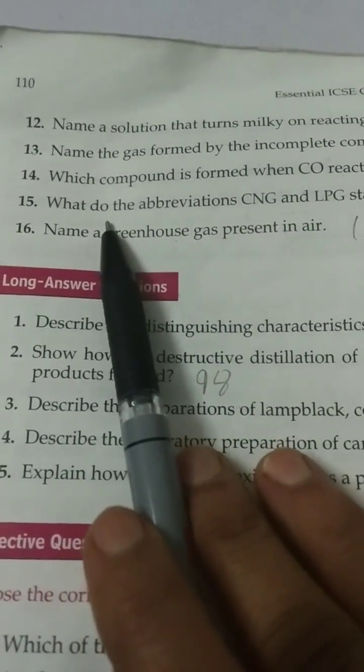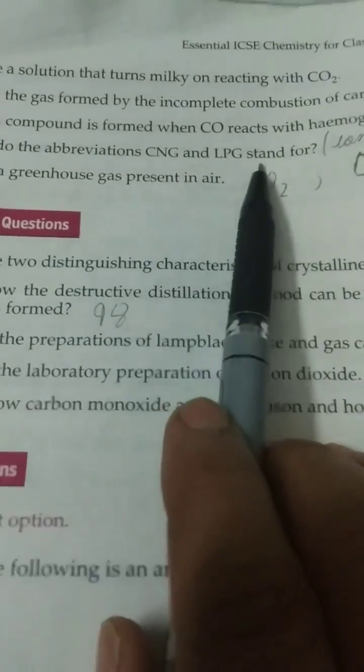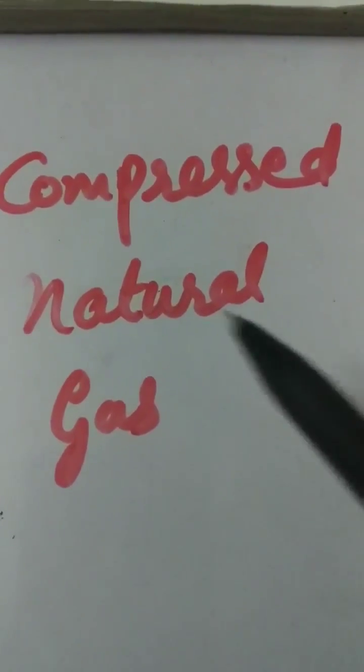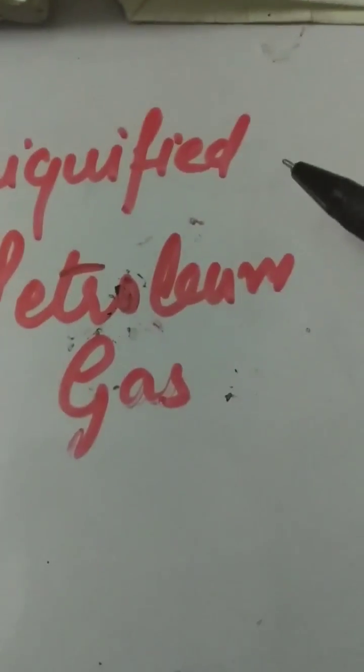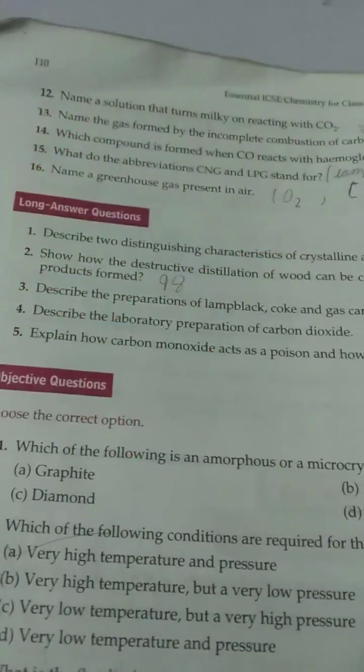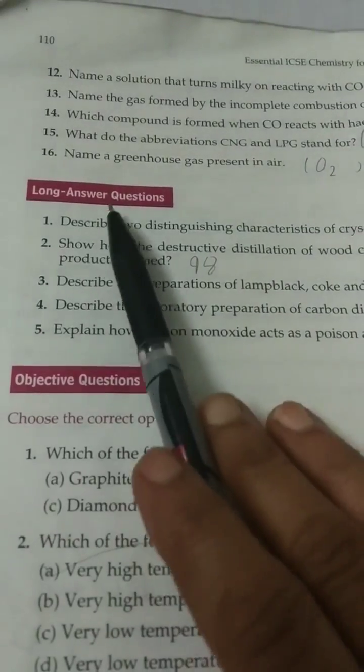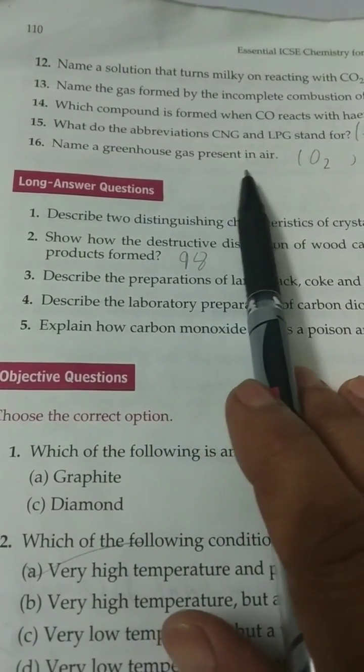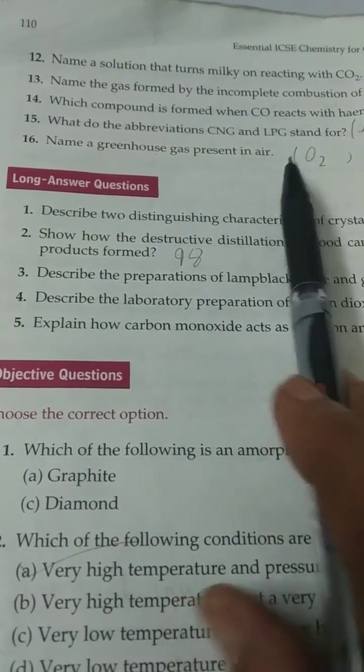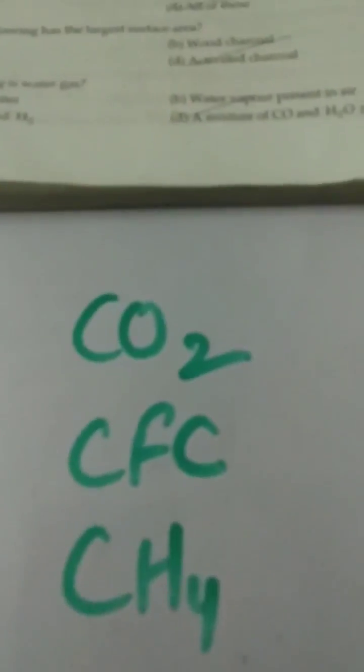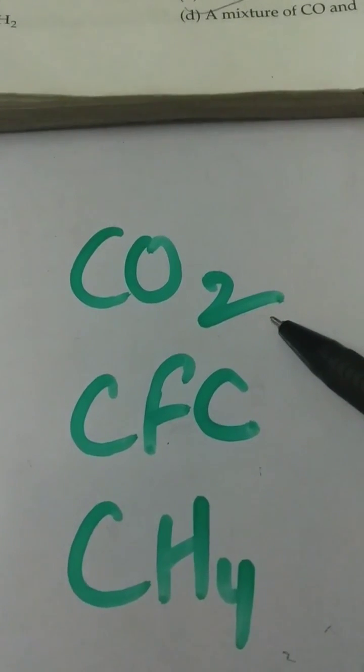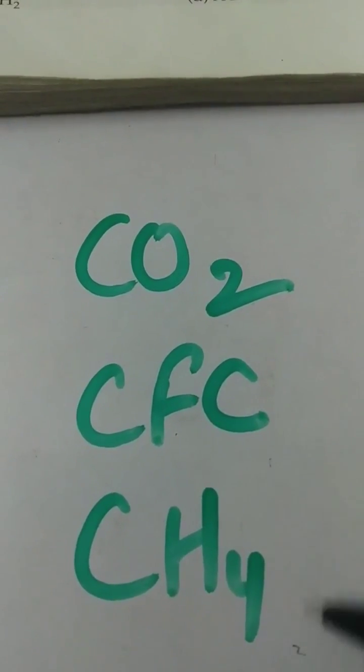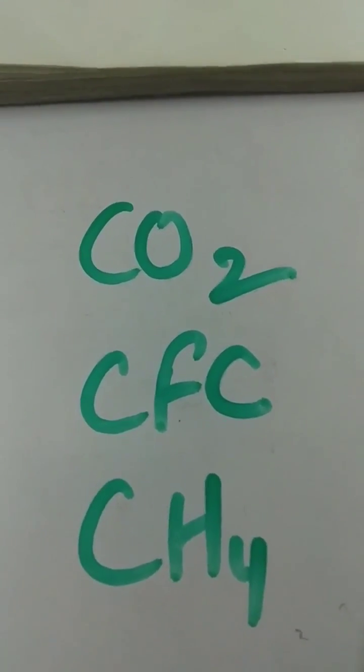Fifteen, what do the abbreviations CNG and LPG stand for? CNG stands for compressed natural gas. LPG stands for liquefied petroleum gas. Sixteen, name a greenhouse gas present in air. Greenhouse gas present in air - carbon dioxide. And methane, you can write, because these also cause greenhouse effect.